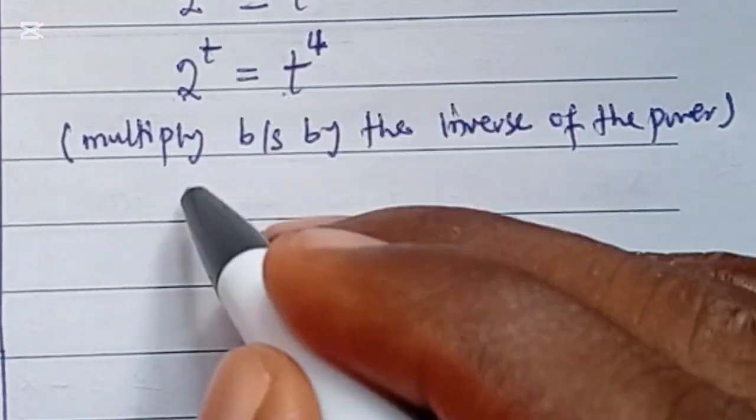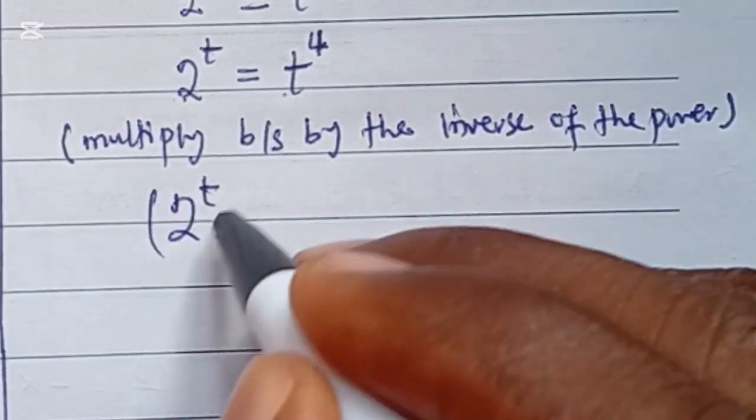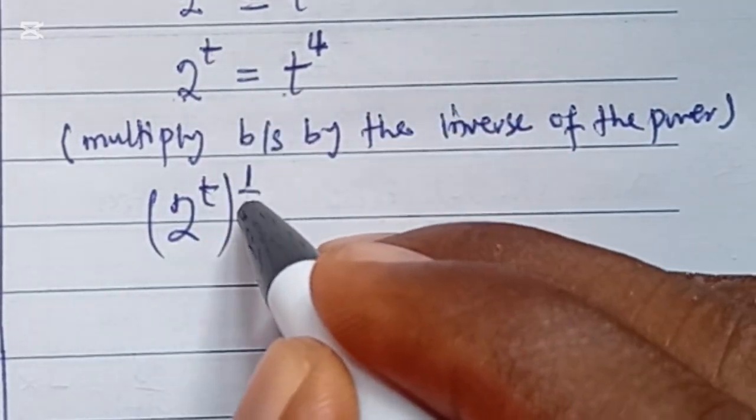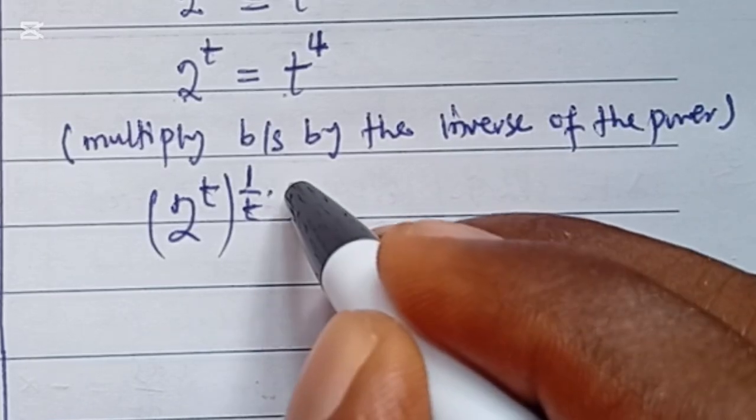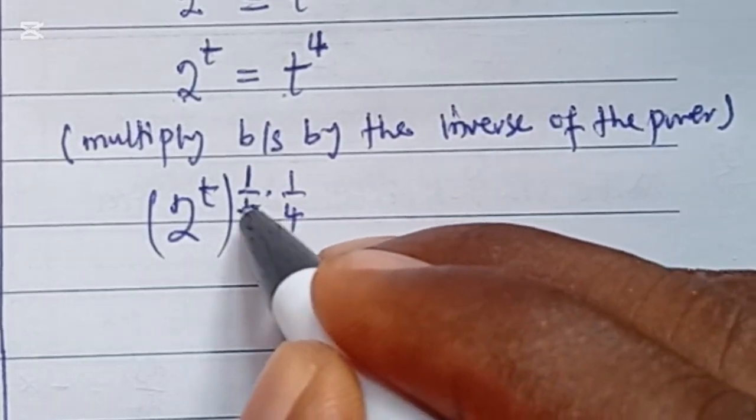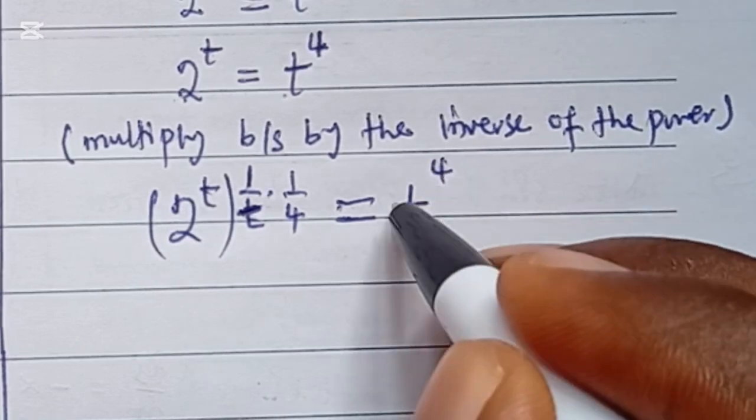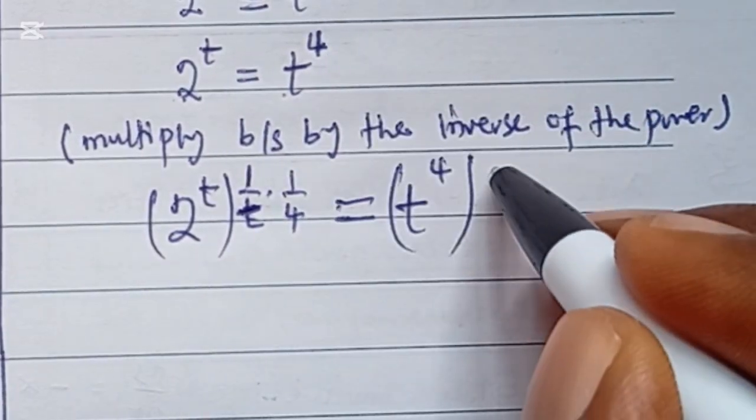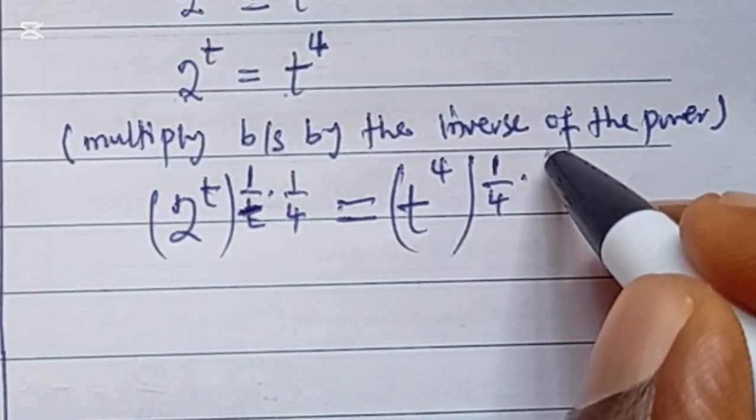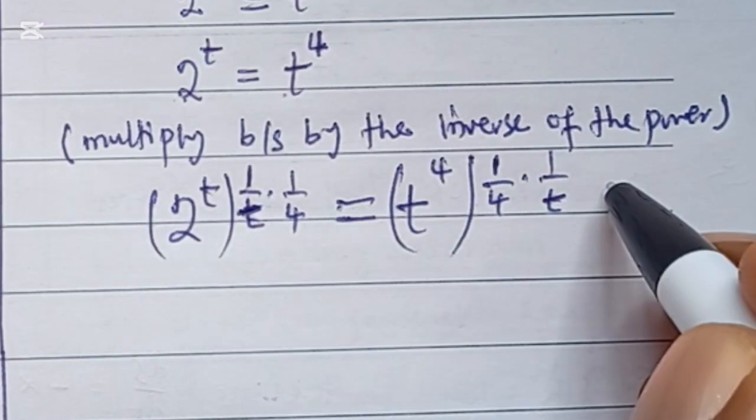So what I mean is this. You are going to get 2 to the power of t in the bracket. So you multiply by the inverse of t and the inverse of 4. And then on the right-hand side, which we have t to the power of 4, we multiply by the inverse of 4, which is 1 over 4 and the inverse of t. The same t we did to the left, that's what we do to the right.